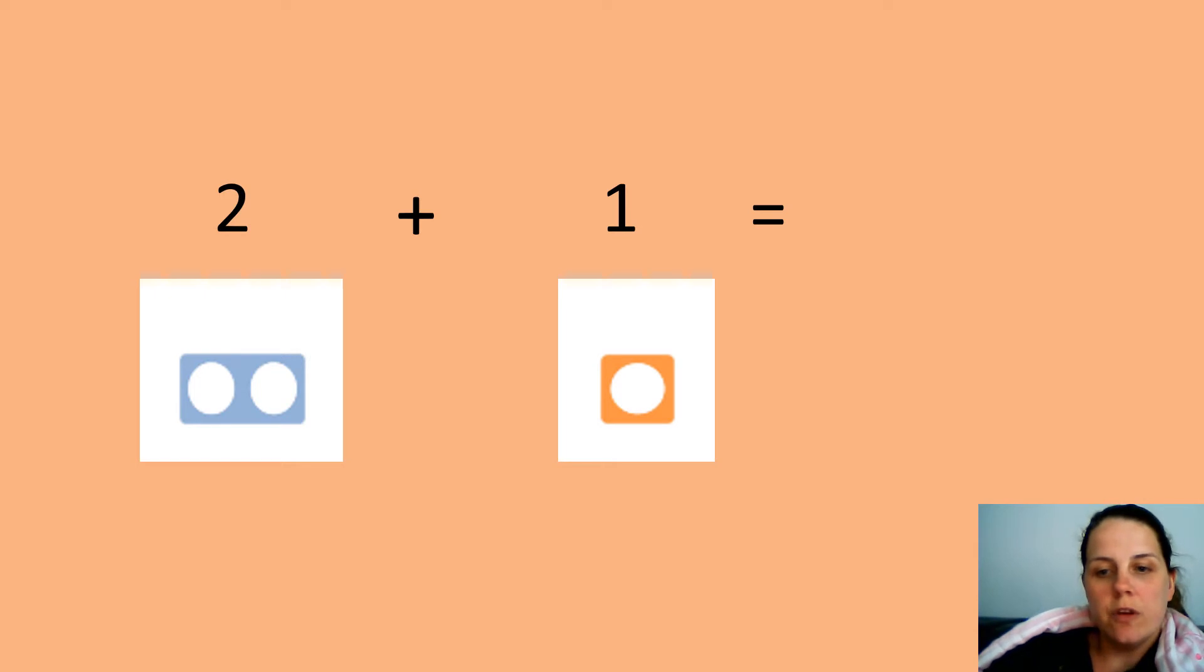So the first one I'm going to go through with you. We're doing 2 add 1 equals. Using our Numicon, which you've seen before in class, we can count the circles: 1, 2, 3. So my answer is 3, okay?